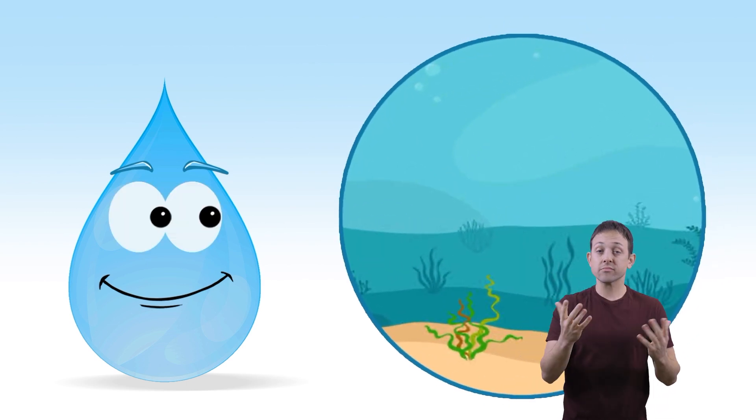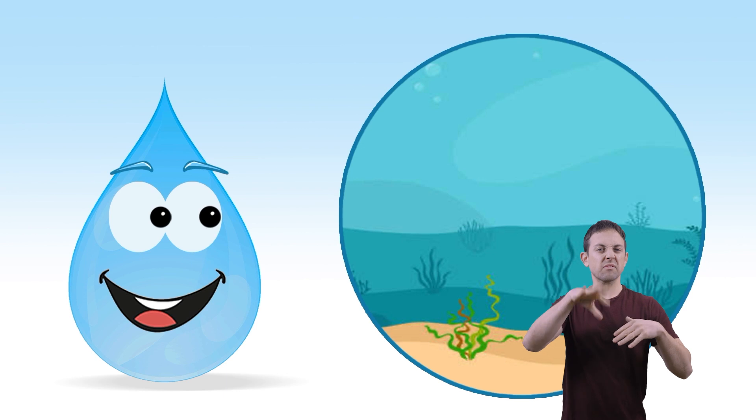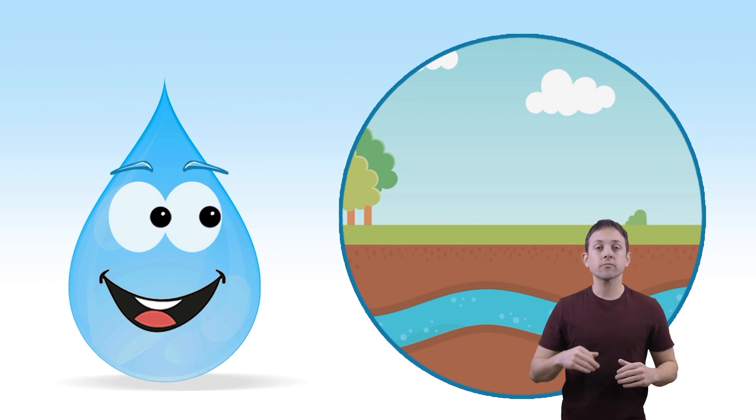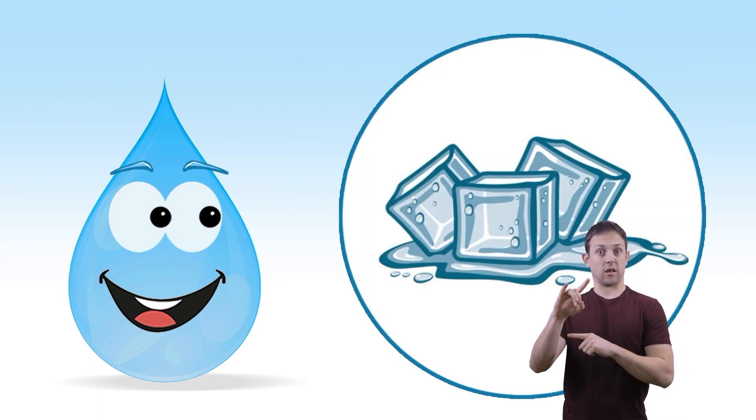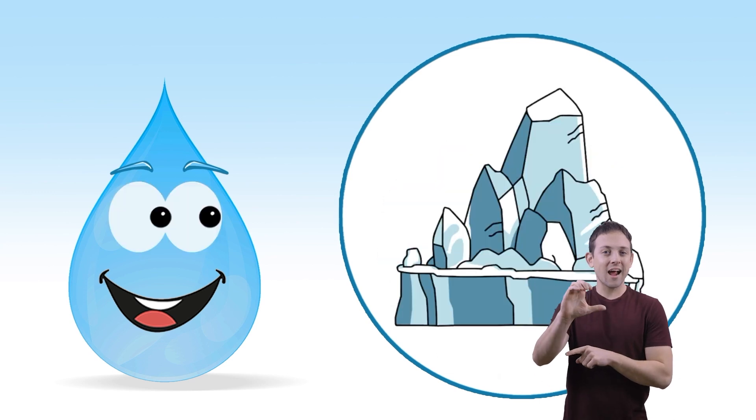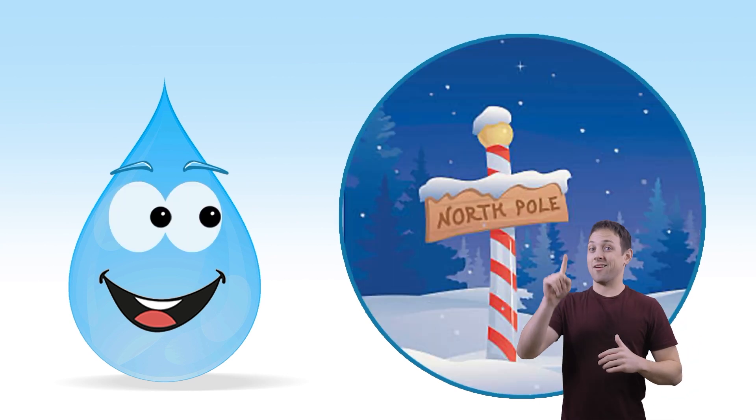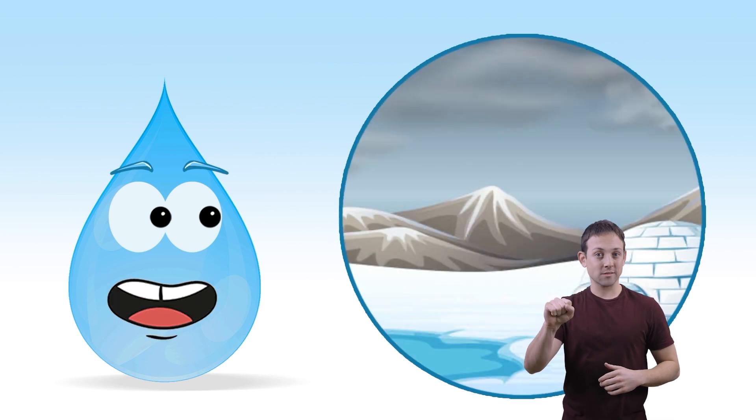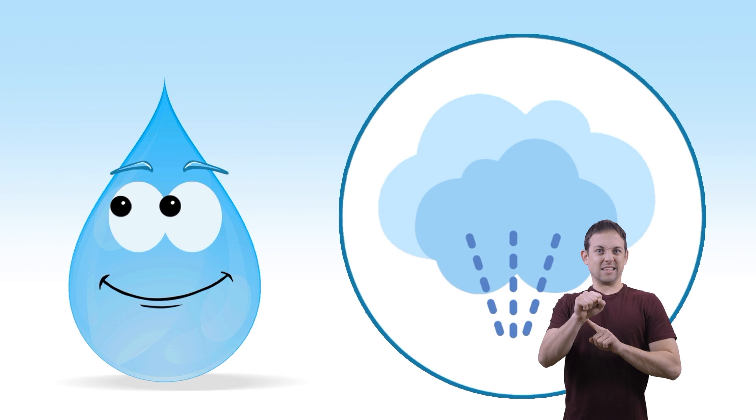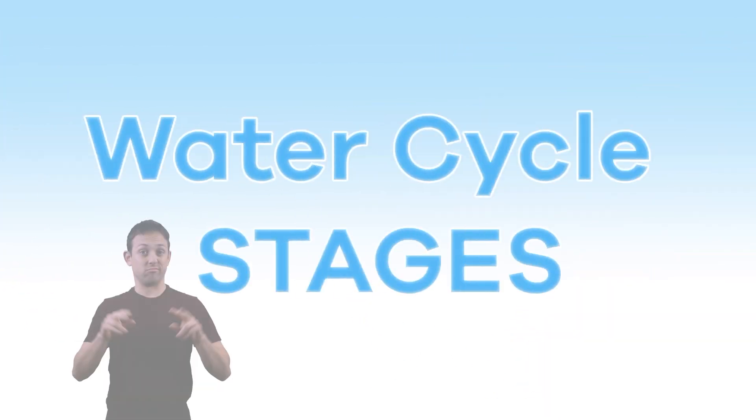Water in its liquid phase is found in oceans, rivers, lakes, and even underground. Solid water, or ice, is found in glaciers, snow, and at the north and south poles. Water vapor is a gas, and it is found in the Earth's atmosphere. Water cycle stages.